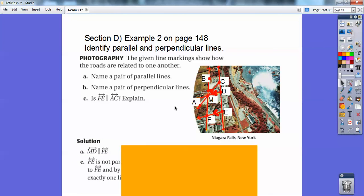And then name a pair of perpendicular lines. Perpendicular lines are formed by that right angle right there, so line MD would be perpendicular to line BF.